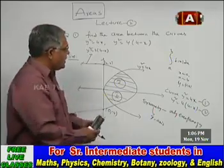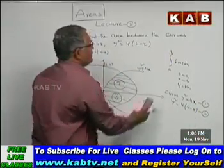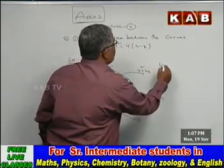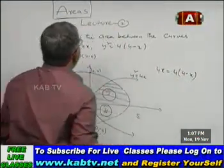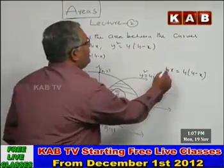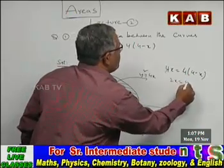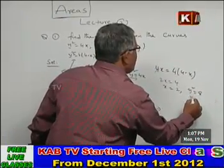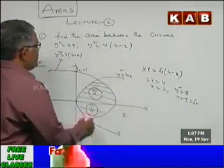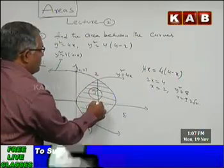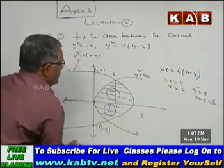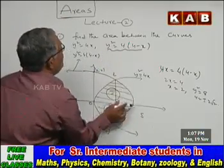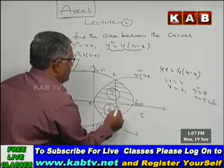To calculate the area, we first find the point of intersection by equating the values of y²: 4x = 4(4 − x), which gives 2x = 4, so x = 2. Substituting x = 2 gives y² = 8, so y = ±2√2. Dropping a perpendicular at x = 2, that line meets the x-axis at (2, 0). From the second curve, when y = 0, x = 4, giving the point (4, 0).